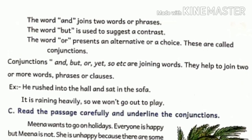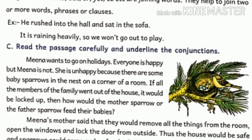Conjunctions — and, but, or, at, so, etc. — are joining words. They help to join two or more words, phrases, or clauses. Example: 'He rushed into the hall and sat on the sofa' — 'and' is a conjunction. Another example: 'It is raining heavily, so we won't go out to play' — 'so' is a conjunction.